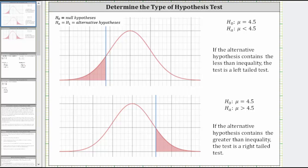This video will show how to determine whether a hypothesis test is a left-tailed test, right-tailed test, or two-tailed test. We can determine this by analyzing the alternative hypothesis.